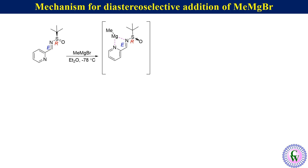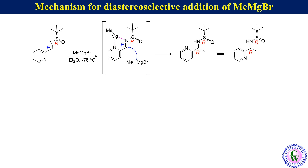Here we can see that the top-face attack of methyl magnesium bromide is hindered due to the sulfinyl oxygen. So attack selectively occurs from the bottom face to produce the R,R diastereomer, which can also be drawn as shown.